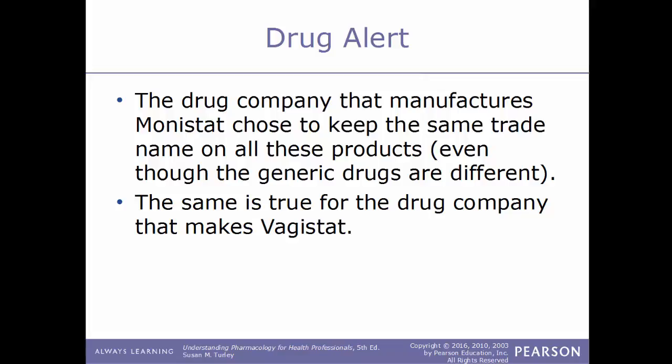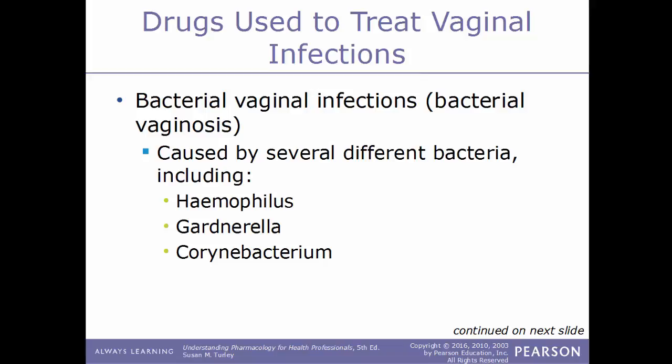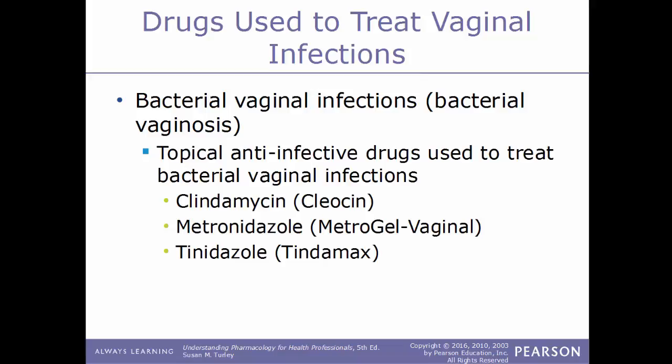Bacterial vaginal infections, also known as bacterial vaginosis, can be caused by several different types of bacteria including Haemophilus, Gardnerella, and Corynebacterium. These are treated with topical anti-infective drugs. Examples include clindamycin (Cleocin), metronidazole (MetroGel Vaginal), and tinidazole (Tindamax).